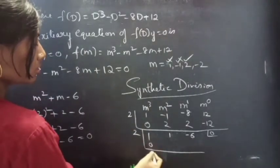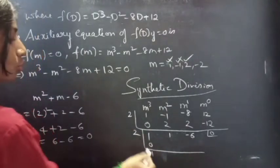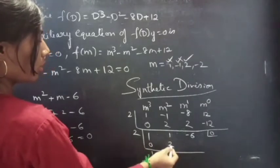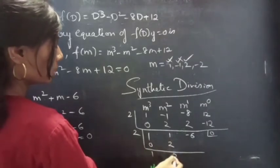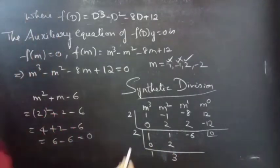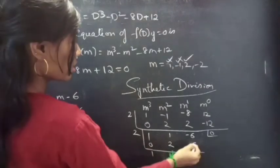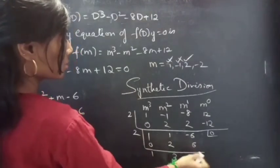Performing synthetic division again with m equals to 2 on the polynomial m square plus m minus 6: bring down 1; 2 times 1 is 2; 1 plus 2 is 3; 2 times 3 is 6; minus 6 plus 6 equals 0.